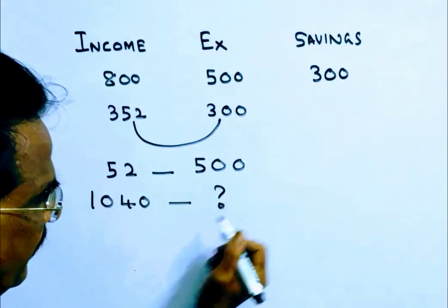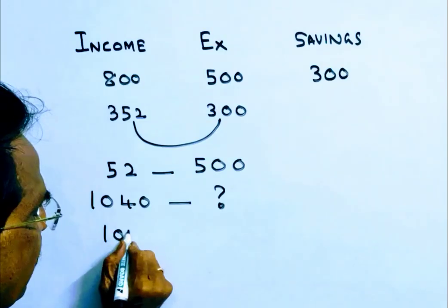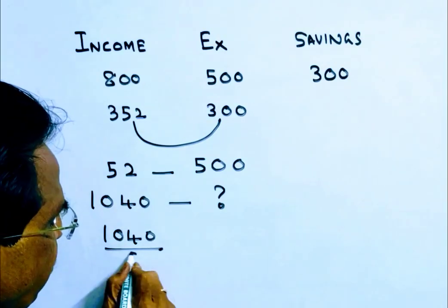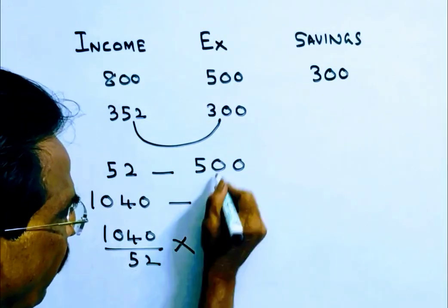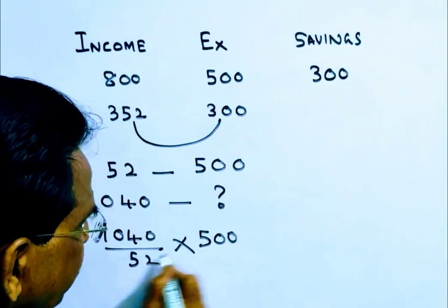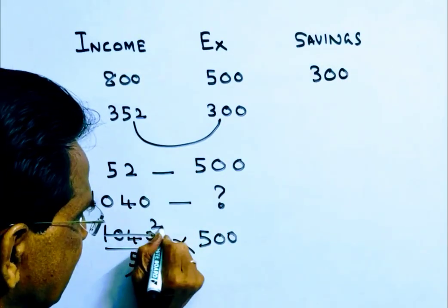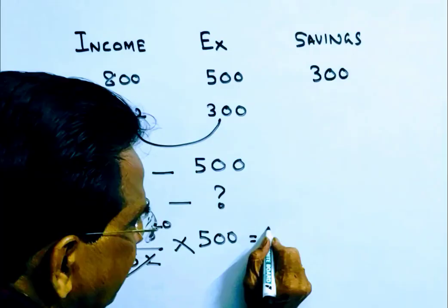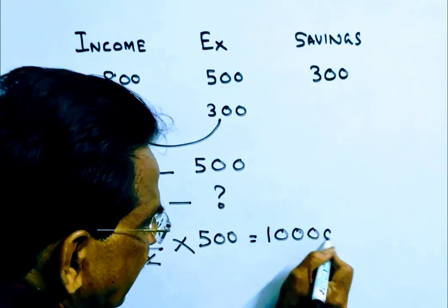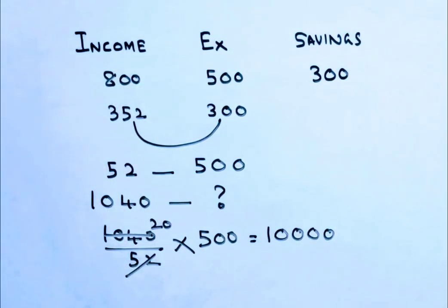Then his expenditure will be 1040 divided by 52, times 500. 52 into 20, so 20 times 500 is 10,000. 10,000 is his expenditure.